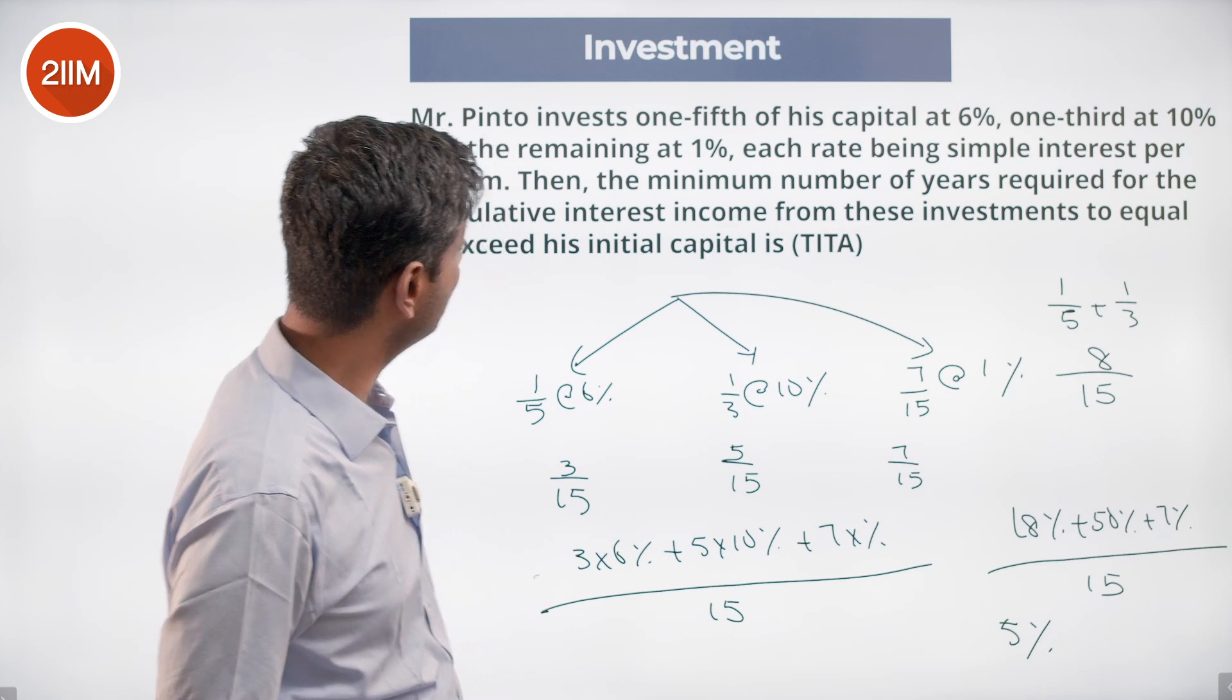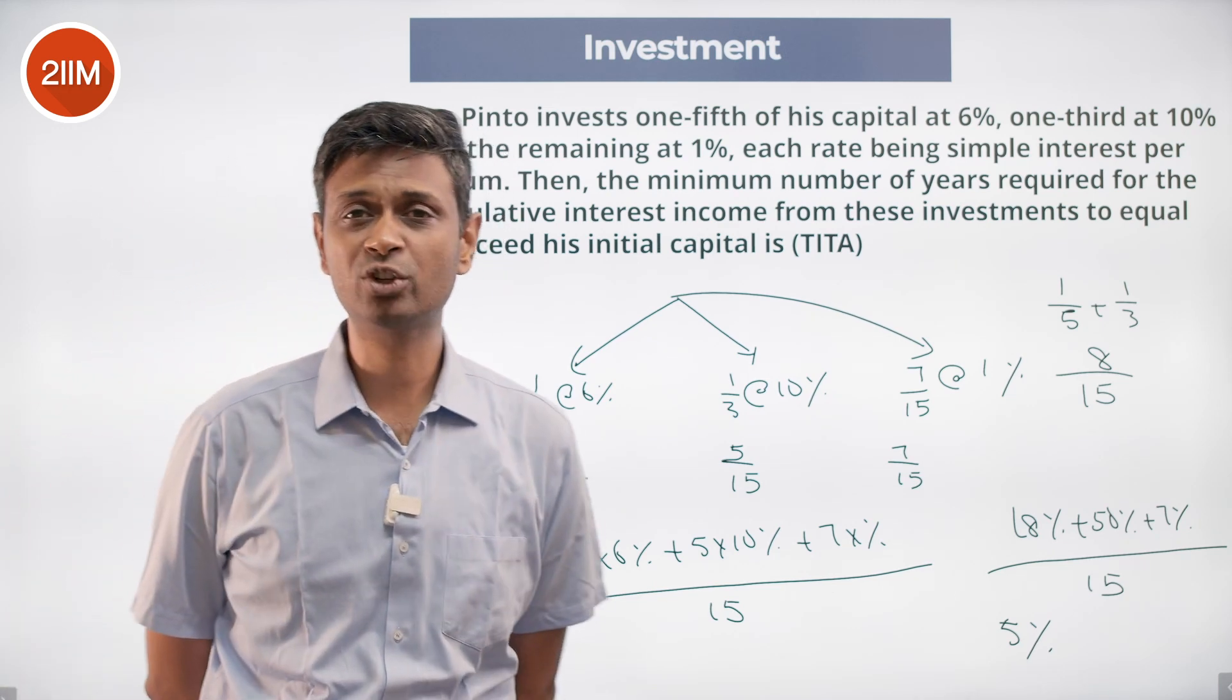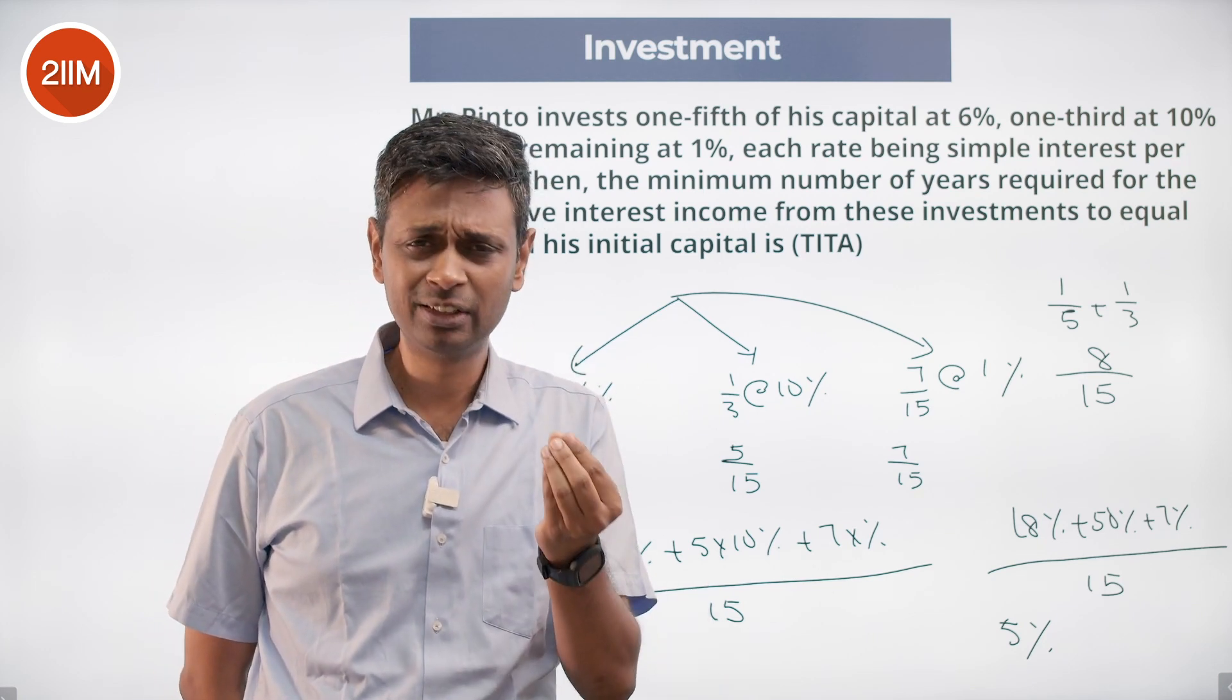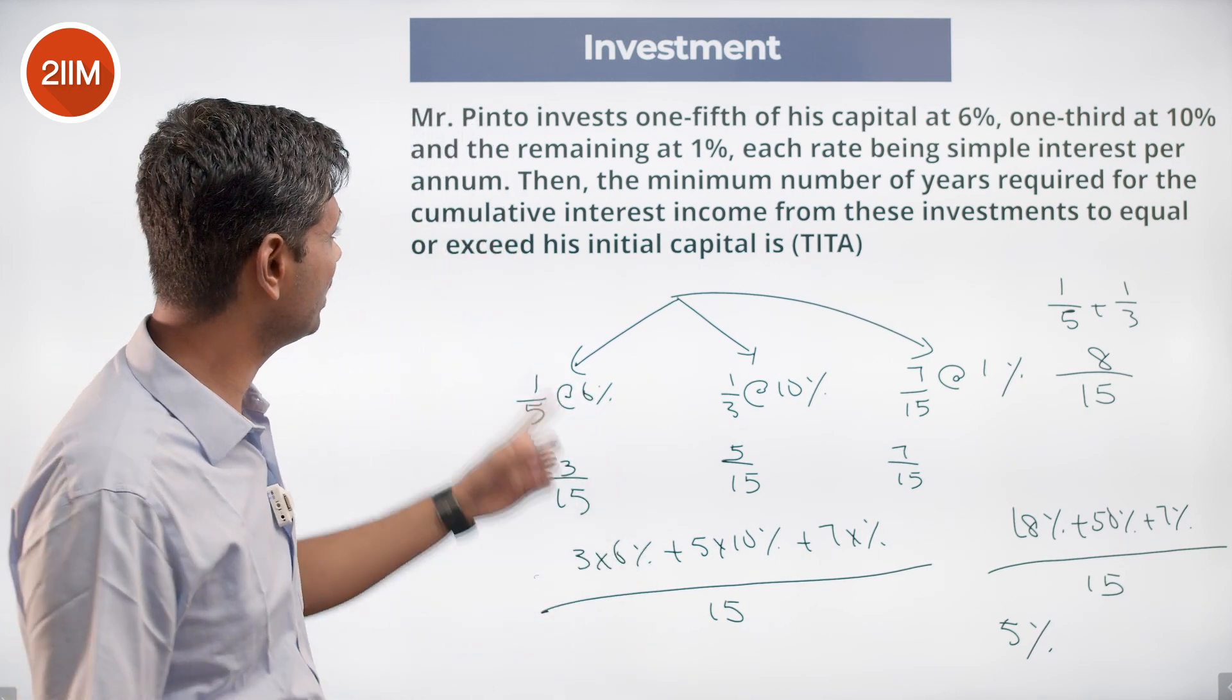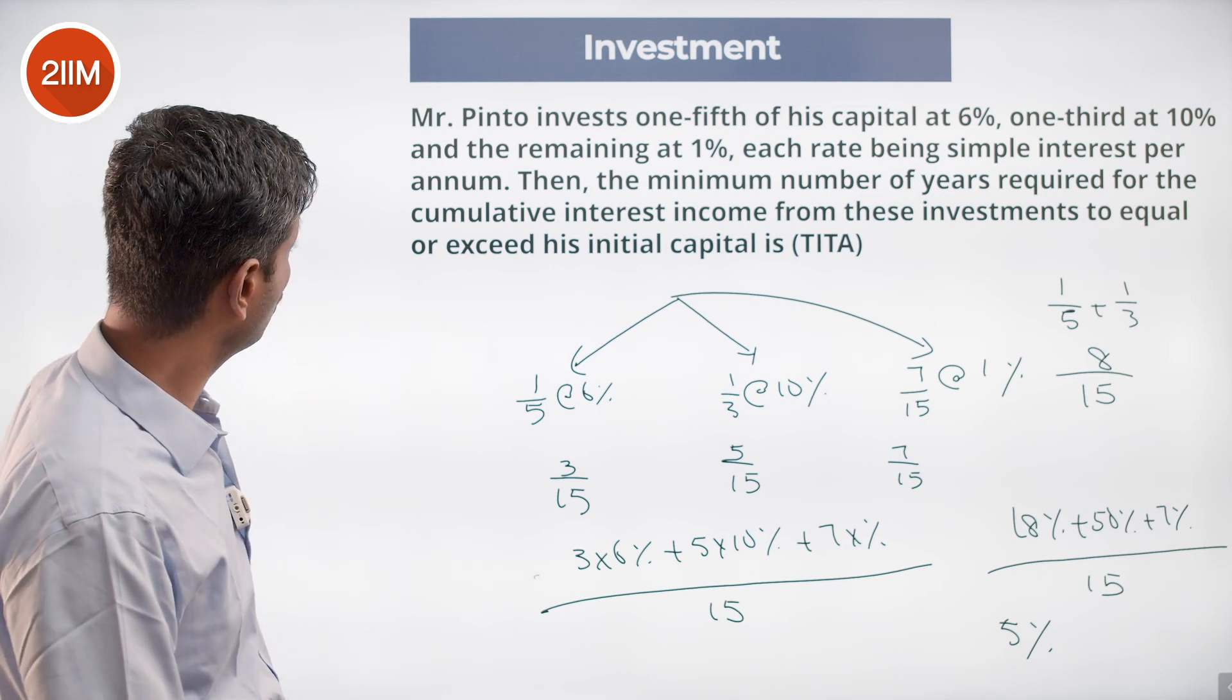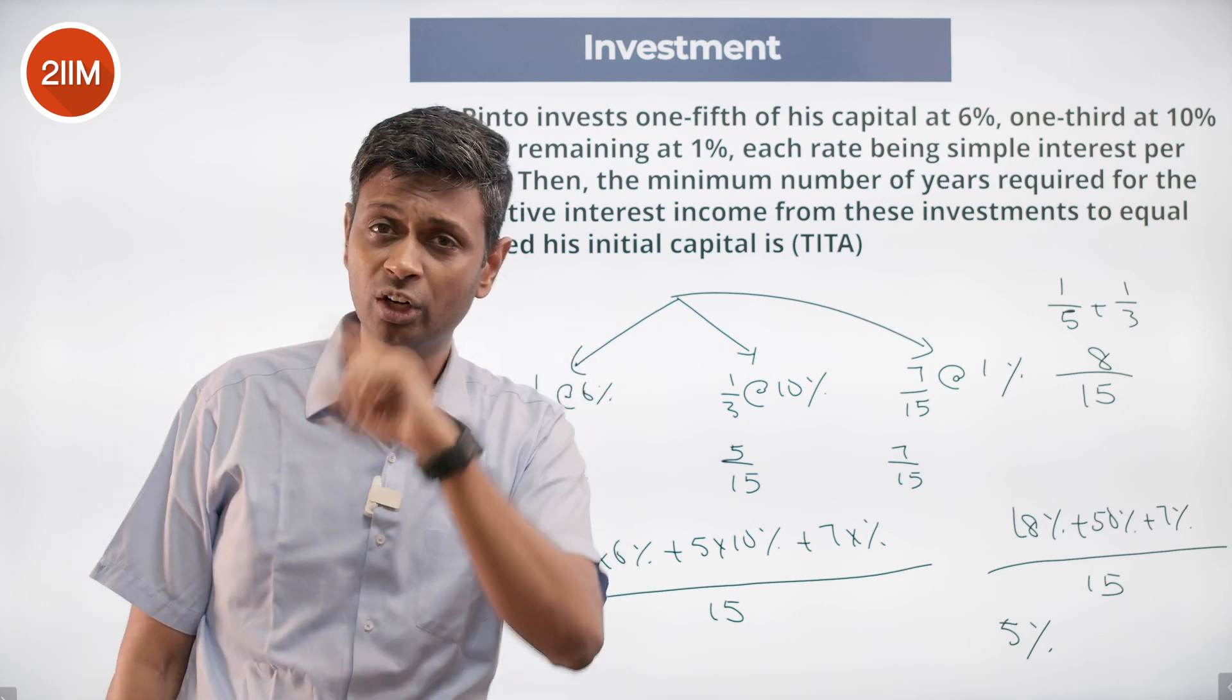The cumulative interest income from these investments to equal or exceed the initial capital means interest should equal capital. You're getting 5 percent per year simple interest. 2 years you'll get 10 percent, 3 years 15 percent, 20 years you'll get 100 percent. In 20 years exactly he'll have interest equal to capital. 20 is our answer.